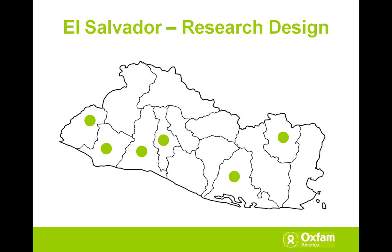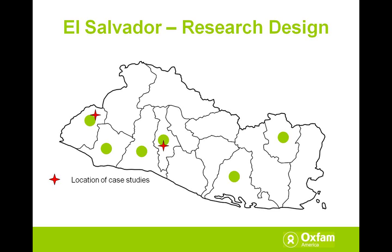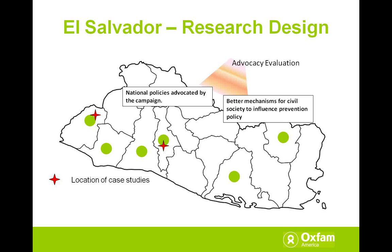A second path was to do comparative case studies that really looked in depth at the dynamics of impact. We studied indicators like the actual prevention actions by municipal governments, whether women were perceiving differences or were more confident that gender-based violence is being addressed. The third pathway was specifically to look at the coalition's influence on decision-makers and policy at local and national levels. Here we used specific techniques in advocacy evaluation, and one researcher was completely devoted to this — looking at indicators such as the quality of national policy changes advocated by the campaign, and whether there were better mechanisms for civil society to influence prevention policy.